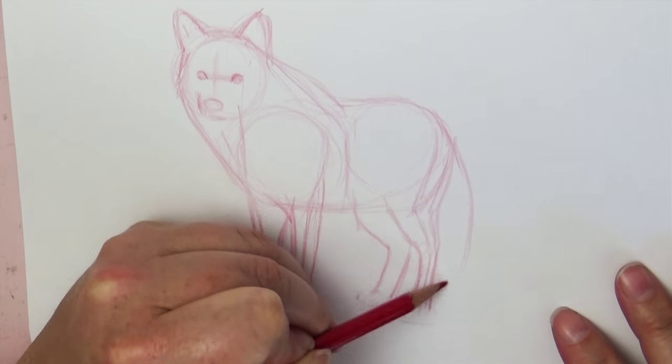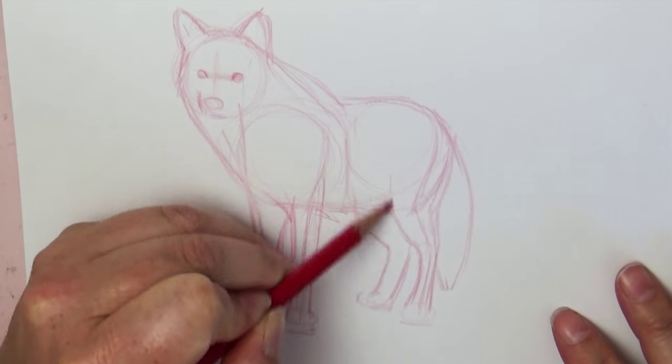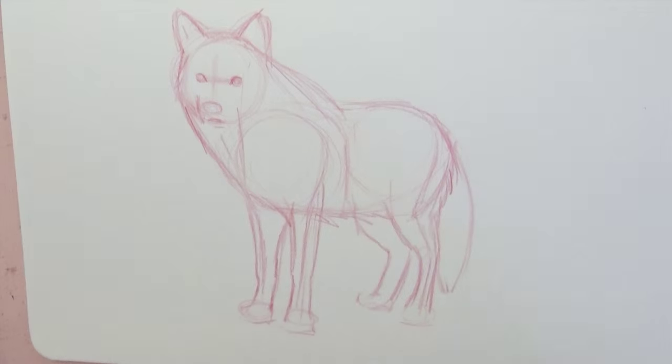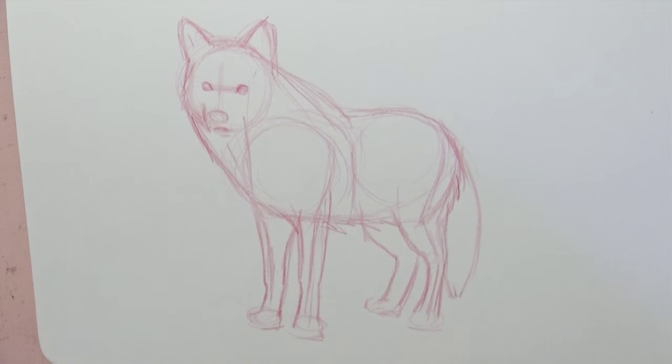When you understand how to take elements from different types of drawings and put them together, then you can do this with anything. You could make a flying ferret or a flying turtle or a flying whale. You can put wings on anything.